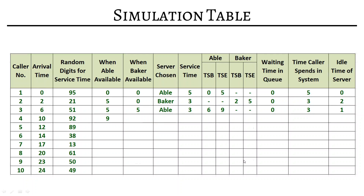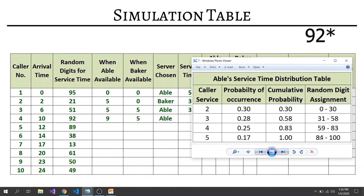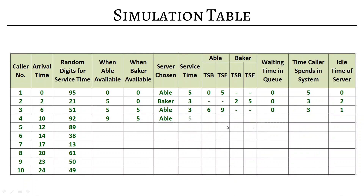For the fourth caller arriving at time 10, Abel is free at 9 and Baker is still free at 5 — both idle again, so we choose Abel. Random digit 89 gives service time 5. Service begins at 10 and ends at 15. Baker is free. Waiting time is 0; time in system is 5. Abel was free from 9 to 10, so idle time is 1 minute.